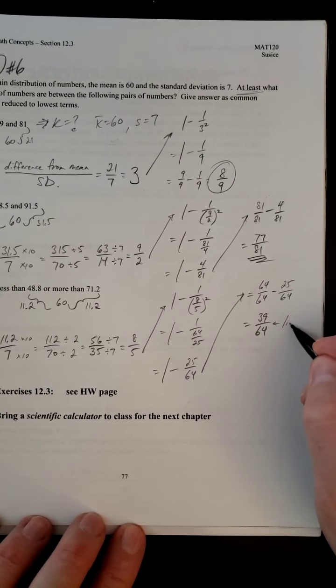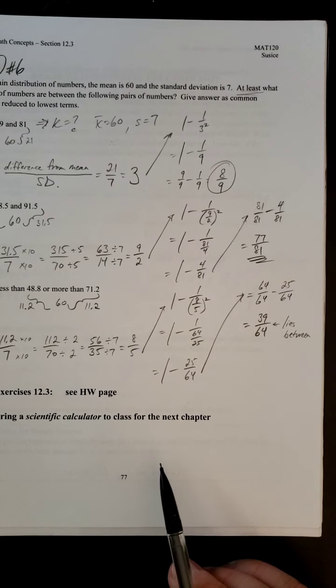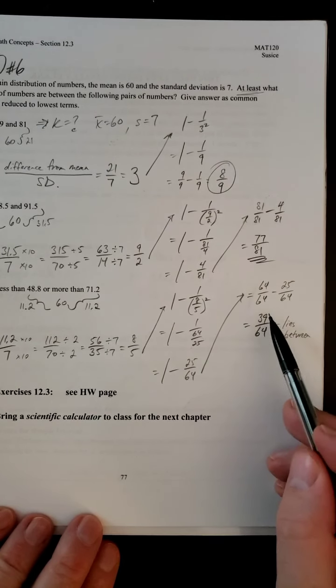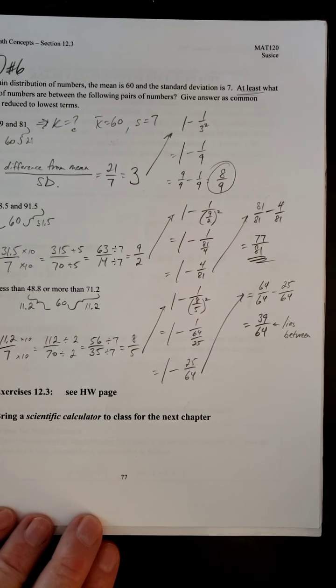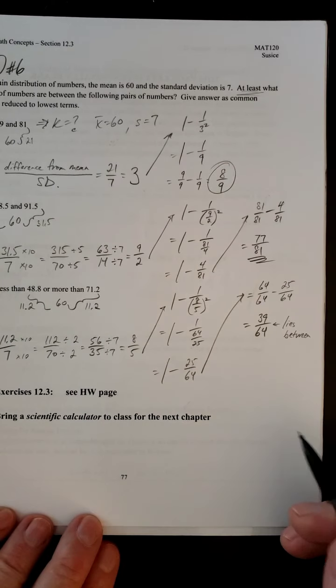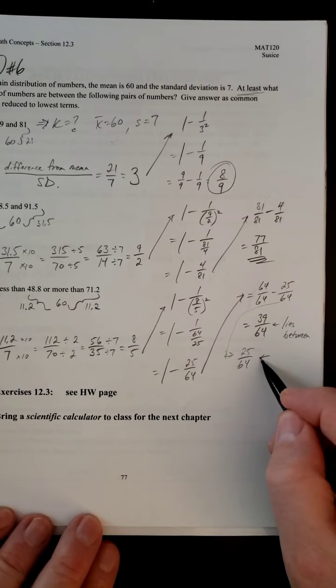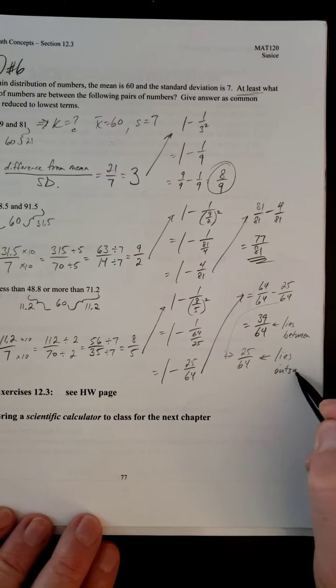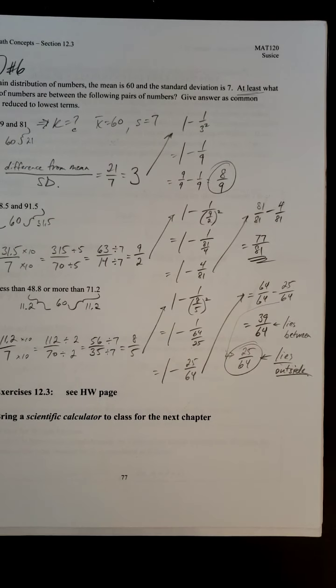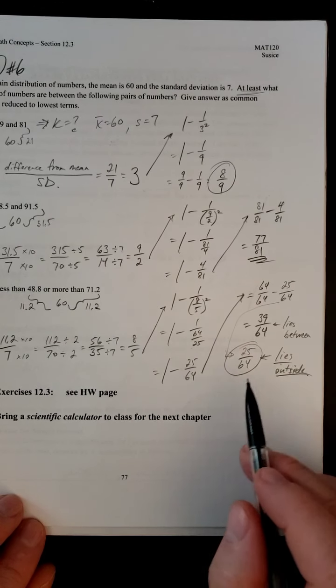This is what lies between. They want what's outside of what's in between. They want what's on the low side and on the high side. So if there were 64 numbers, 39 of them would be between those cutoffs. That means that the remaining 25 have to be outside. So we're going to get 25 over 64. And this is what lies outside. This is what they want. They want all the other numbers that are not in between. So 25 of them out of 64 would have to be outside.